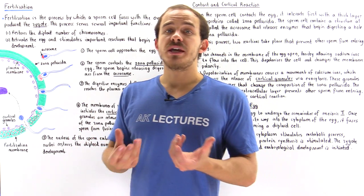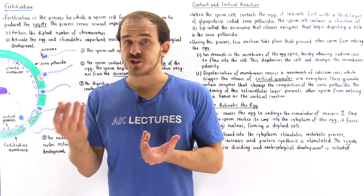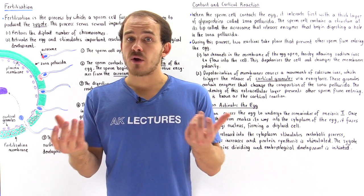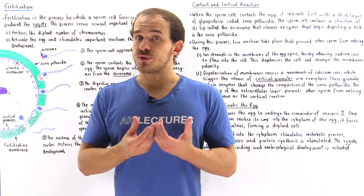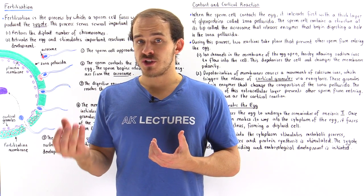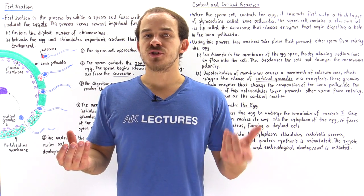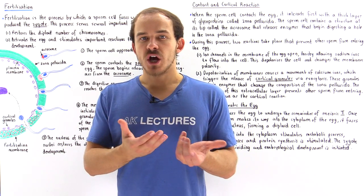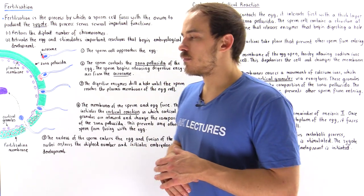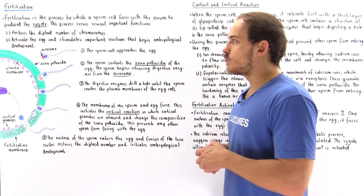When these two cells, the sperm and the egg, fuse, the number of chromosomes is restored — 23 plus 23 gives us 46, a diploid number of chromosomes.